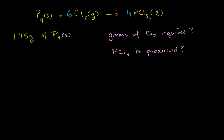Now the next thing we have to do, now that we know we have a balanced equation, is figure out how many moles of phosphorus we're dealing with. Because once we know the moles, we can use the stoichiometric ratios — essentially, for every one mole of P₄, I need six moles of Cl₂, and for every mole of P₄ I'm going to produce four moles of PCl₃. So you want to get it all in terms of moles.